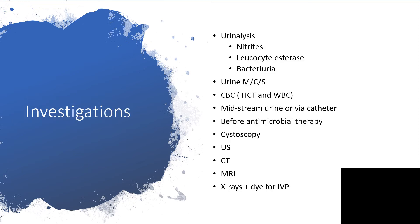Investigations to be done: We start with urinalysis, looking out for nitrites, leukocyte esterase, and bacteriuria. We can perform urine microscopy, culture, and sensitivity so that we will be able to pick the exact antibiotics for the causative agents. We can have a complete blood count. Midstream urine via catheter will be fine, and this should be done before we start antimicrobial therapy — except in acute severe cases where we may start antibiotics empirically before taking a sample.